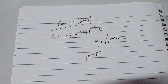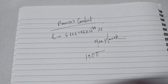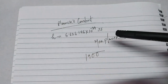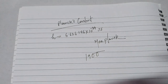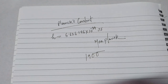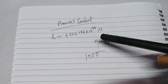Planck's constant is a physical constant denoted by h and has a value of 6.626176 times 10 to the power minus 34 joule-seconds. It was first introduced by Max Planck in the year 1900, and after this constant the study of quantum mechanics was started. It's a very important constant and we are going to calculate this value today.